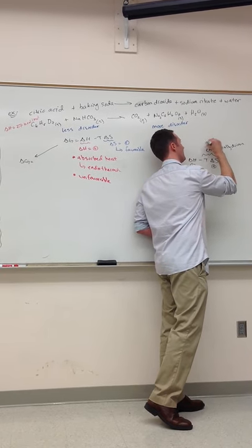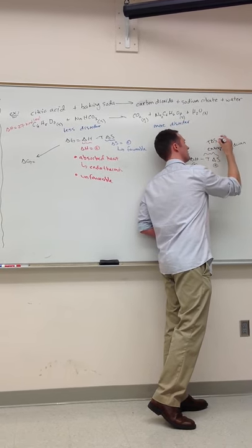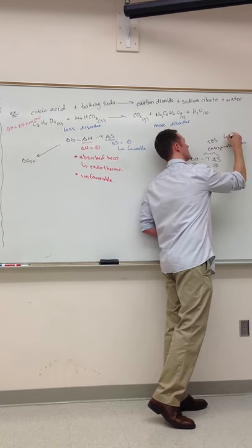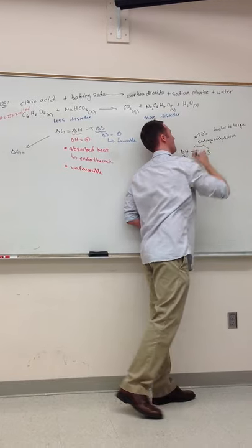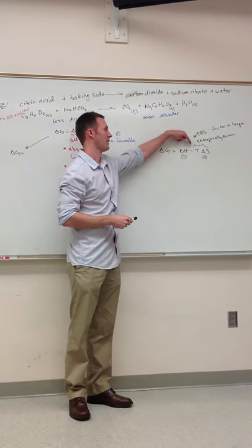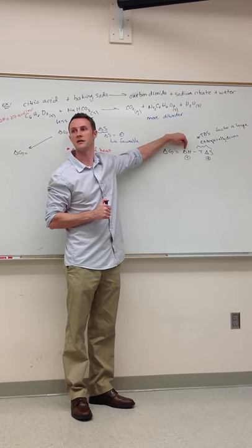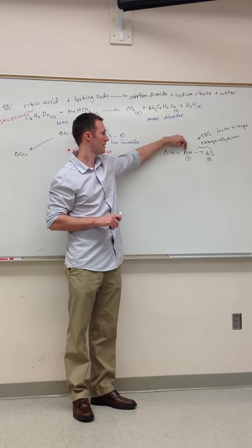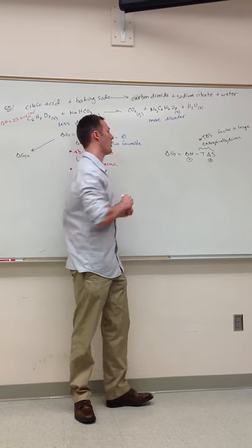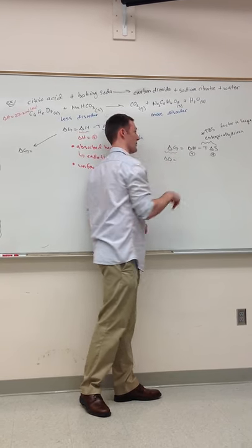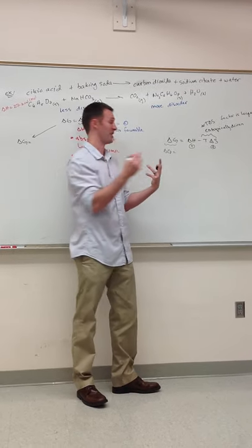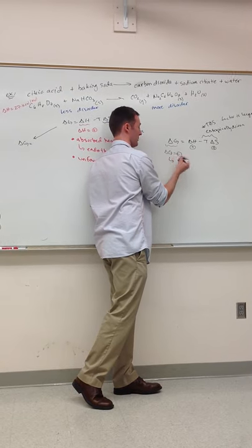Entropically driven. The delta H, the T delta H, the T delta S, excuse me, factor is large. And we have a big difference in entropy. And that's bigger than the changes in the bond energies. Because what did we observe? We know that delta G has to be what? Because we saw the reaction occur. It has to be negative if we saw it occur. It occurred. It was favorable.